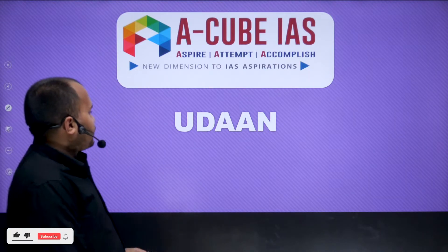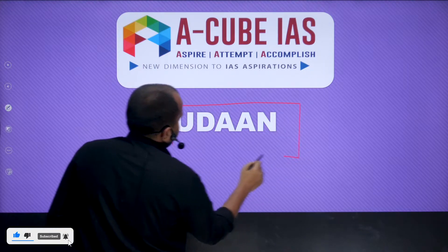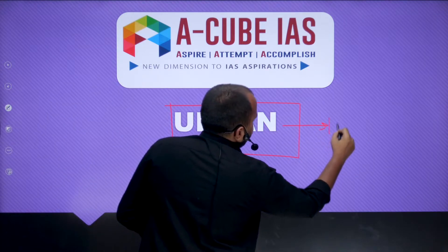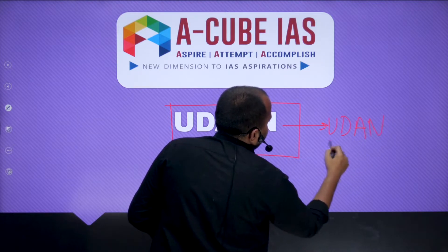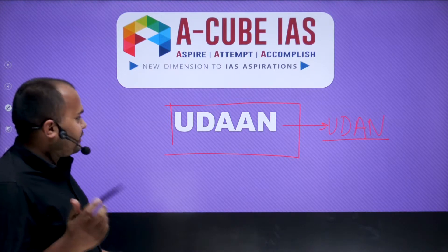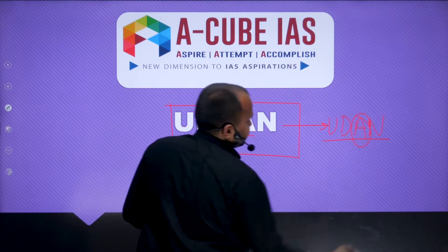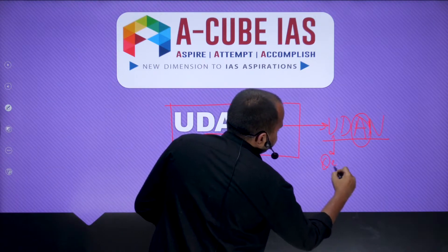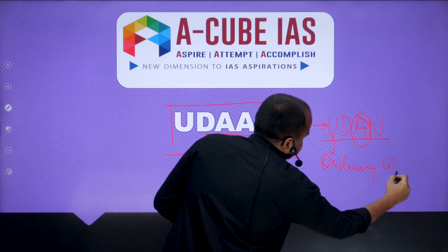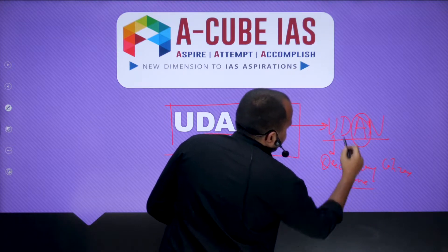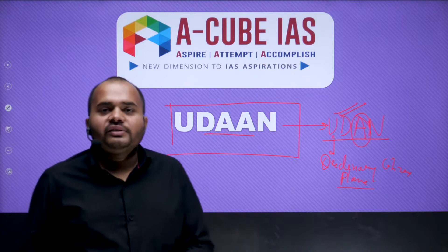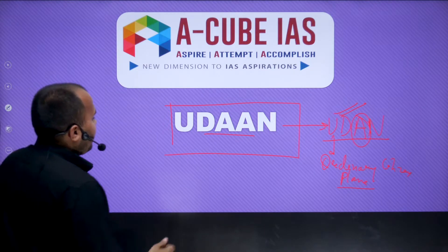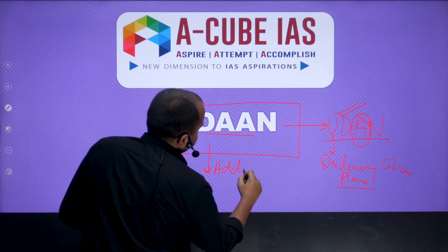Hello everyone, welcome to today's class of current affairs where we will be seeing one of the very important initiatives of the Rajasthan government, which goes by the name of Udaan. You might have heard about the term UDAN — Ude Desh Ka Aam Nagrik. The difference between the two is that here the 'Nagrik' is spelled with double A, and here single A. That scheme gives ordinary citizens the opportunity for an aeroplane flight at subsidized cost, whereas here we are talking about adding wings to girls.